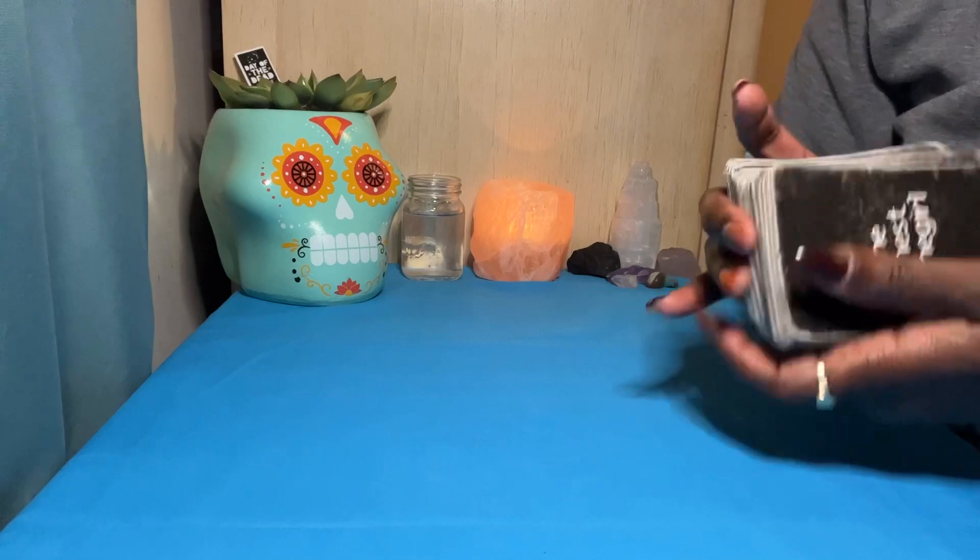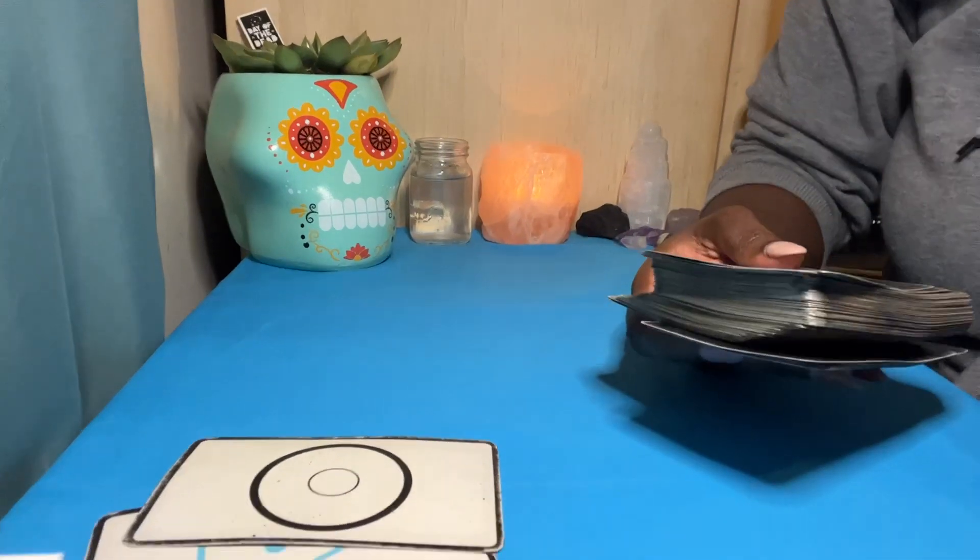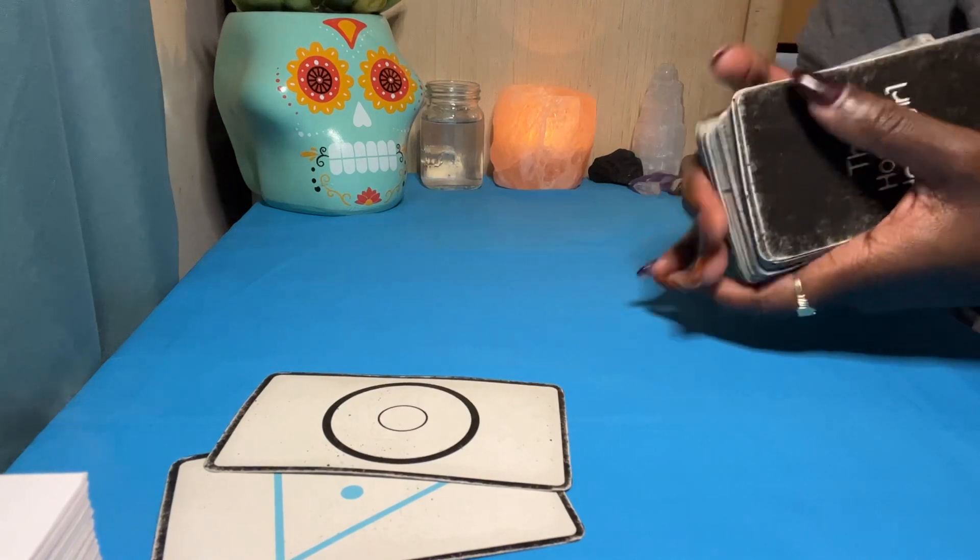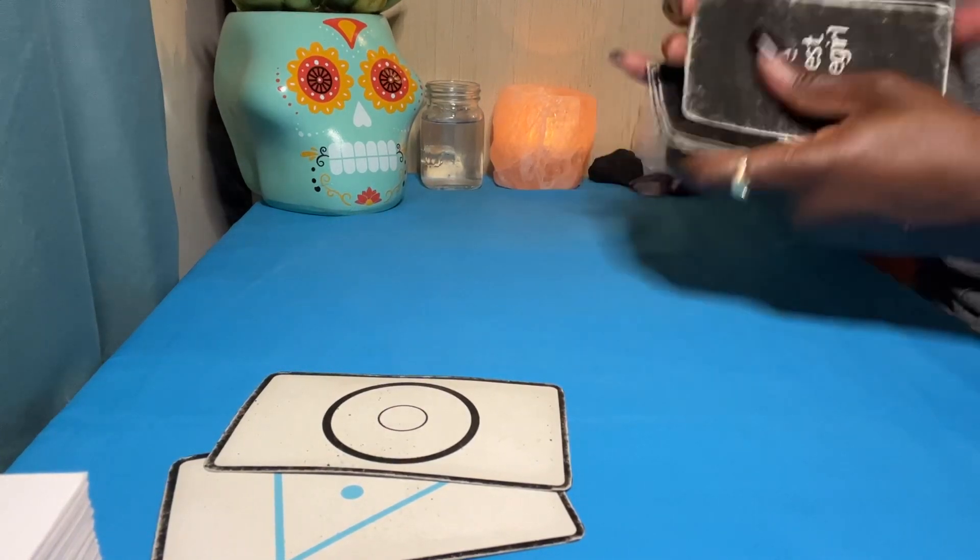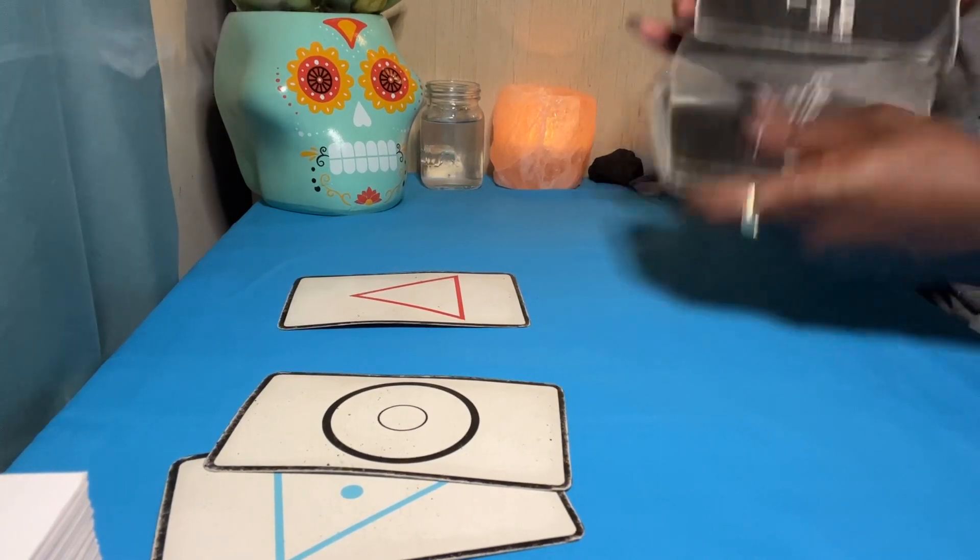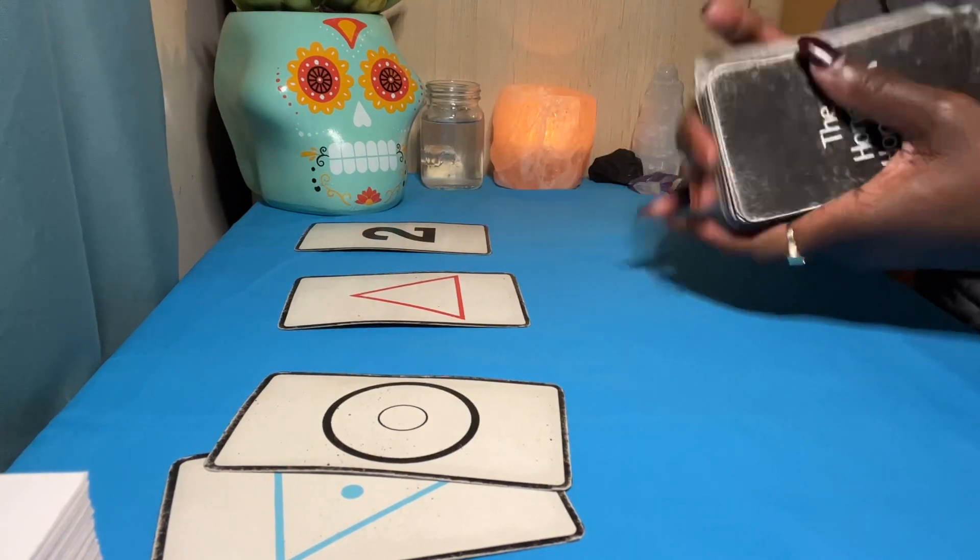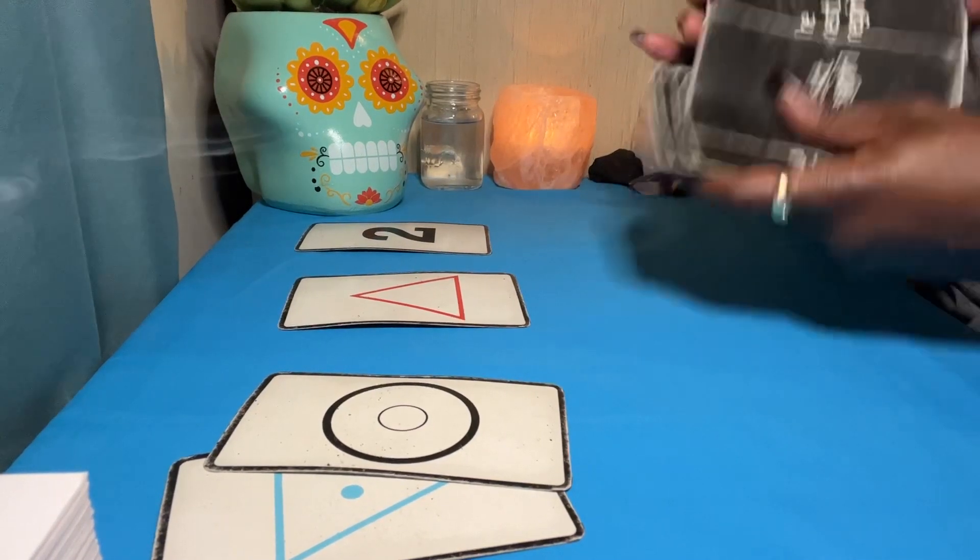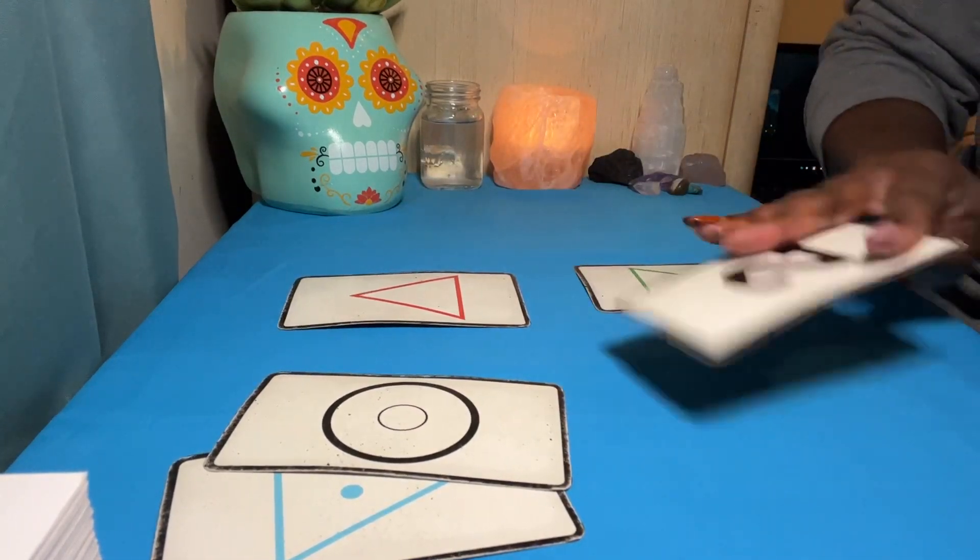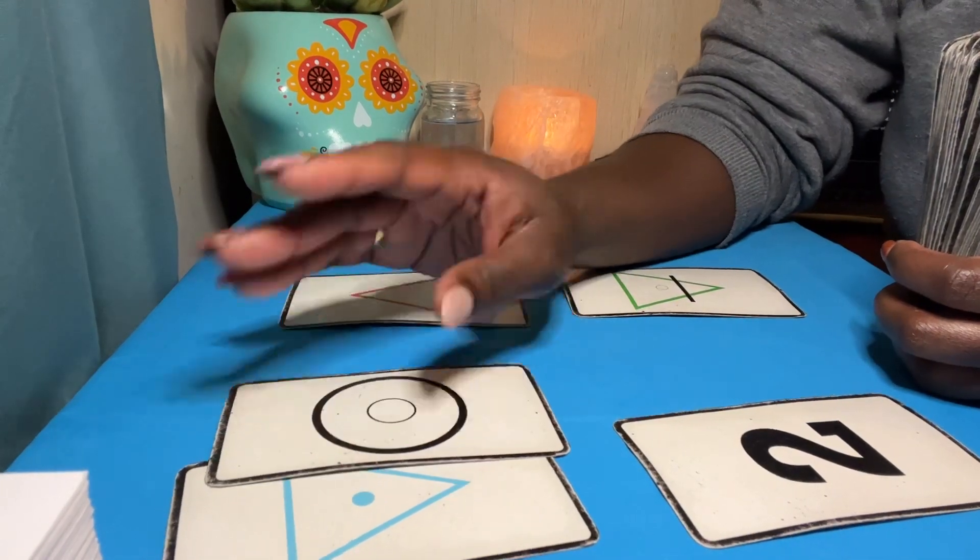Now, we're going to pull some cards for self-awareness. Let me see if I can put this down so you guys can see these cards. Self-awareness, family and friends. I'm going to get a card for family and friends. Let's get one for finances. Let's get one for love and relationship.